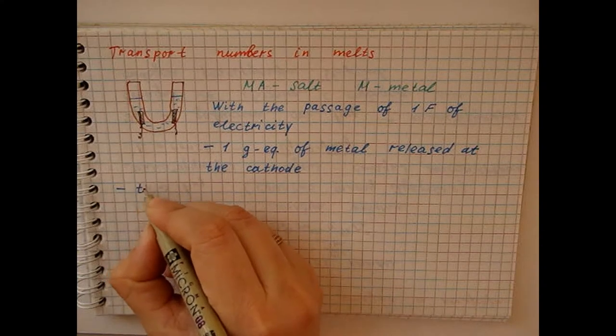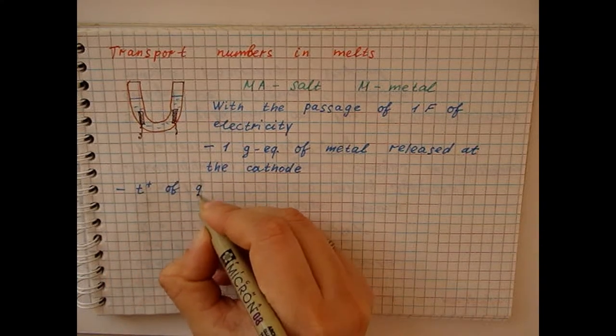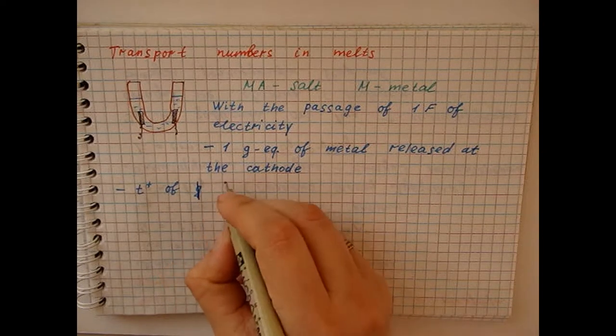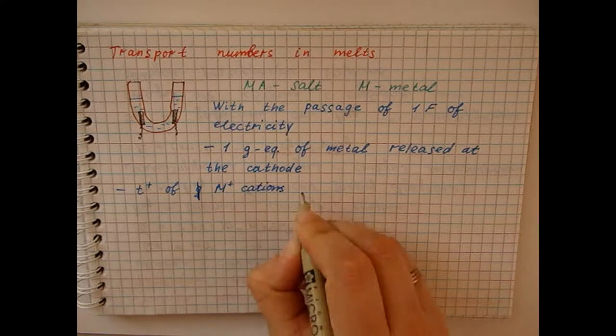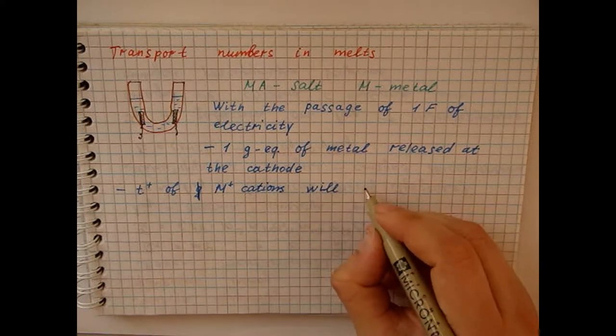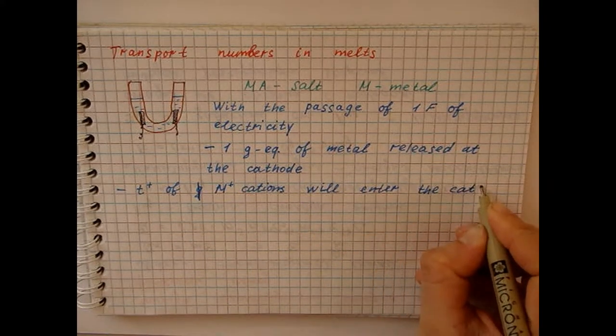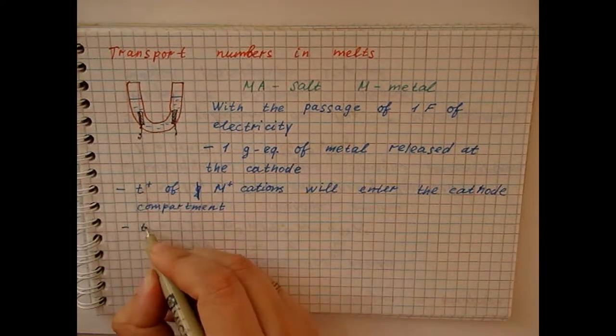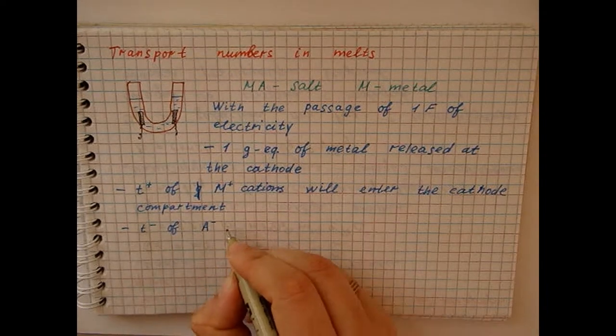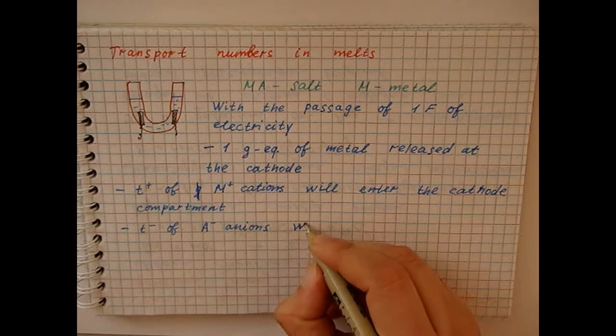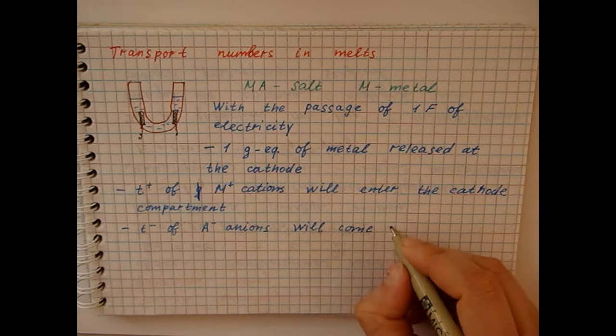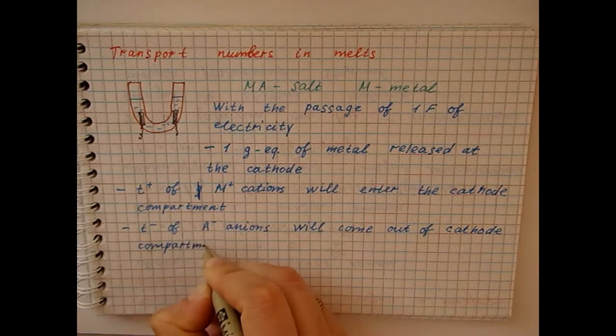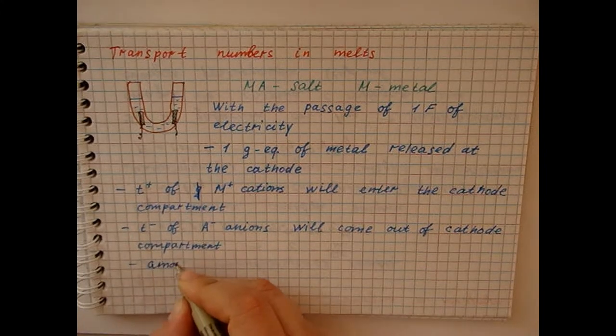At the same time, some number of cations will enter the cathode compartment, and some number of anions will leave this compartment. Thus, the amount of salt will decrease.